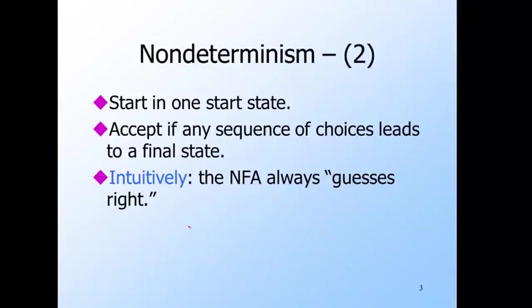Like the DFA, a non-deterministic finite automaton, or NFA as we will call it, has one start state where a computation begins. The NFA can have any number of final states, and an input is accepted if any sequence of choices leads from the start state to some final state. The intuition is that the NFA is allowed to guess which way to go, but it is able always to guess right, since all the guesses are followed in parallel, and the NFA gets credit for the right guesses, no matter how many wrong guesses it also makes.